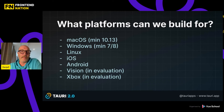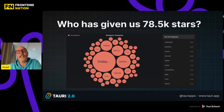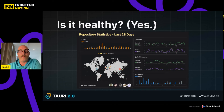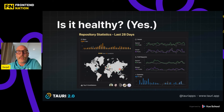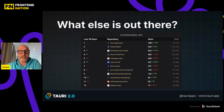These are the platforms we can build for: down to macOS 10.13, Windows 7 and 8, Linux with a large number of variants, iOS, and Android. We have people working on Vision Pro and Xbox but those are super experimental. We've got a lot of GitHub stars — you can go to github.com/tauri-apps/tauri and give us another one — but stars are just a popularity contest. What signals a healthy organization is seeing issues filed and closed, pull requests merged, and consistent activity.